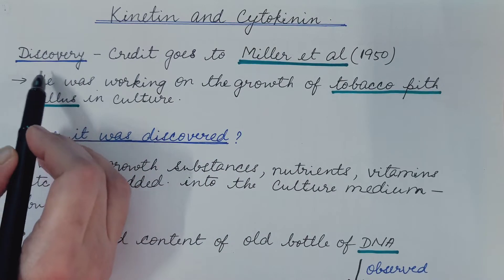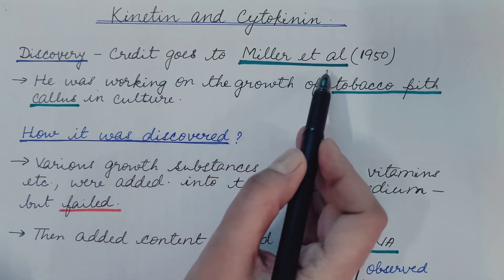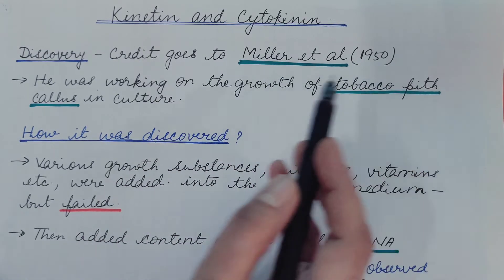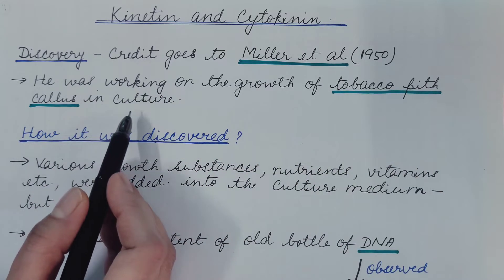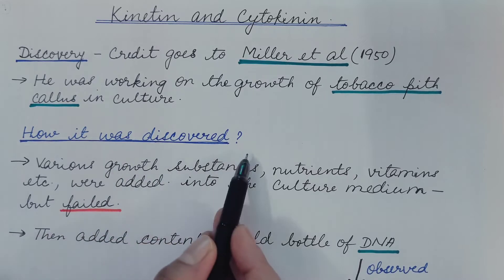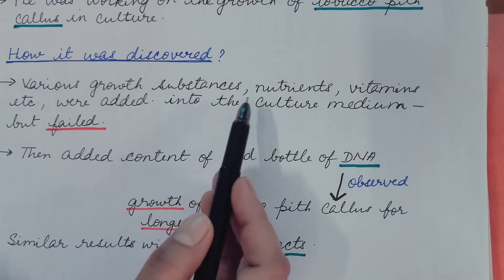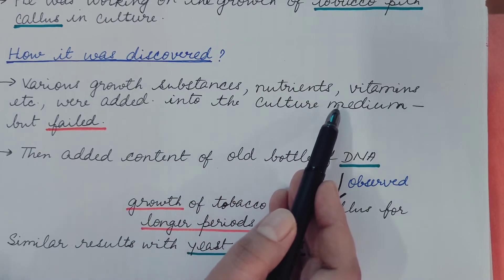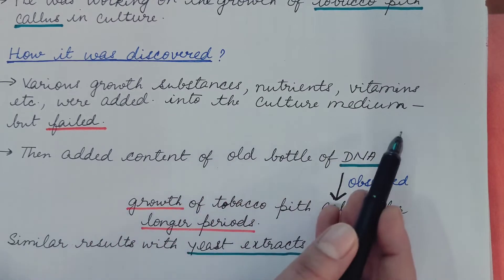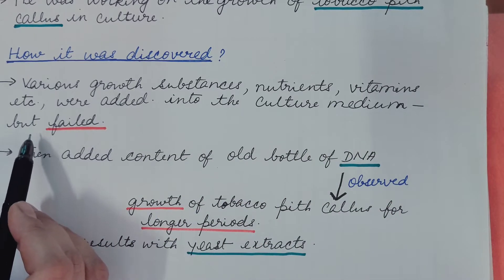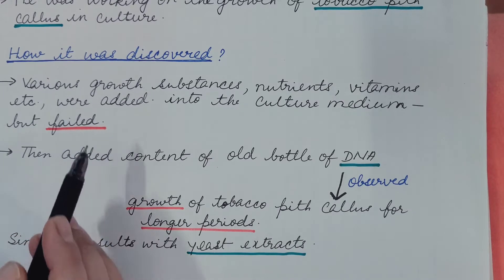First, discovery. Credit goes to Miller et al. in 1950. He was working on the growth of tobacco pith callus in culture. While working on tobacco pith callus, various growth substances, nutrients, vitamins, etc. were added into the culture medium, but these failed to cause any growth in the callus culture.